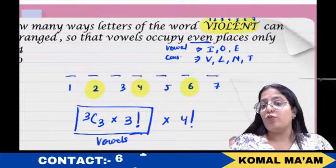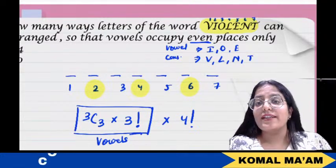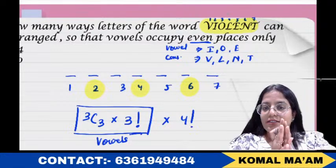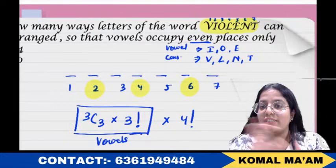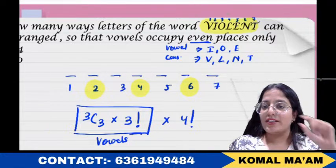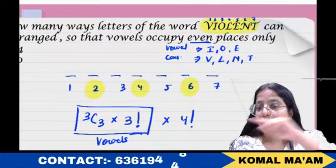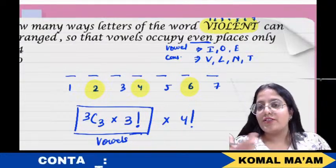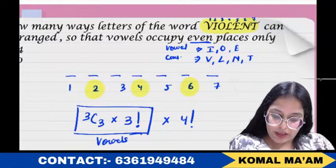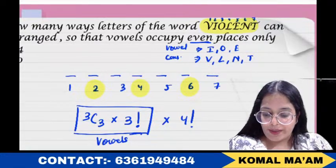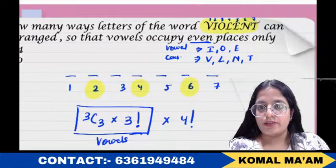You might wonder why we can't simply write seven factorial. The reason is they've given a specific condition: three vowels must sit on even places only — positions 2, 4, and 6 — in three factorial ways. The remaining four consonants fill the remaining four places in four factorial ways. That's why we can't use seven factorial directly. So the answer is 3! × 4! = 6 × 24 = 144. That is option A.